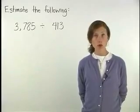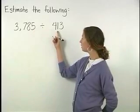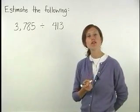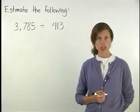To estimate the quotient of 3,785 divided by 413, first round each number so that each number contains only one non-zero digit.